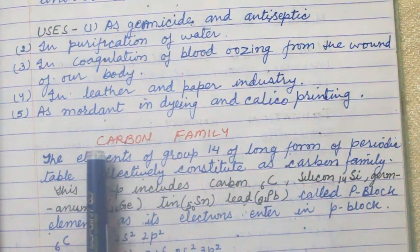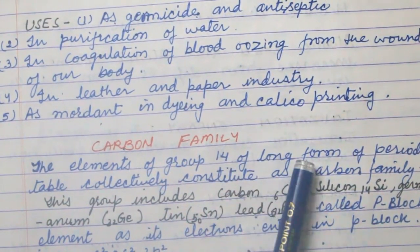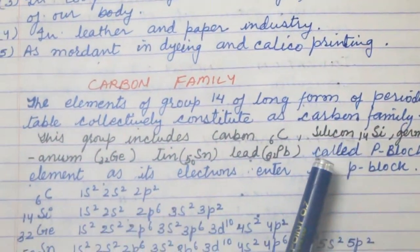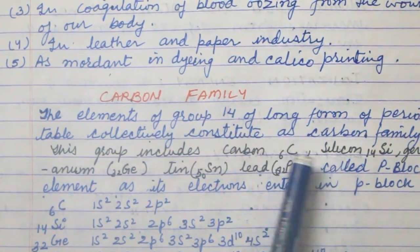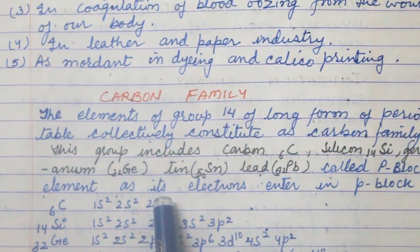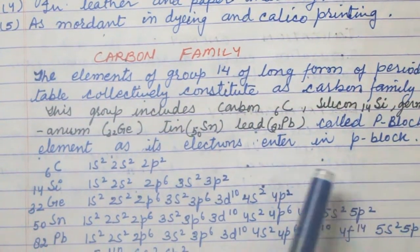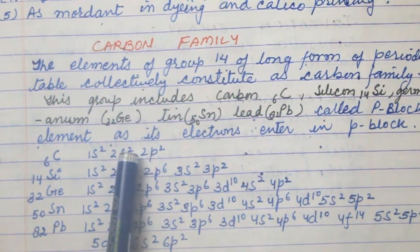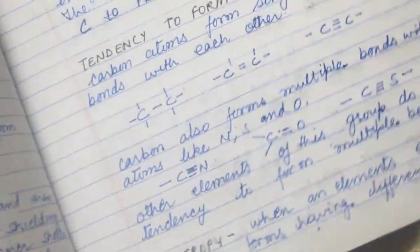Hello students, today my topic is the carbon family. The elements of Group 14 of the long form of the periodic table collectively constitute the carbon family. This group includes carbon, silicon, germanium, tin, and lead. They are also called P-block elements because their electrons enter the P-block orbital.